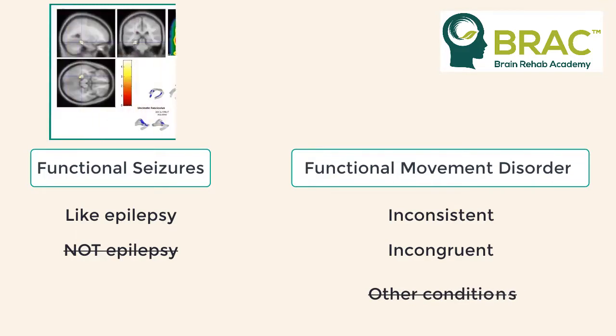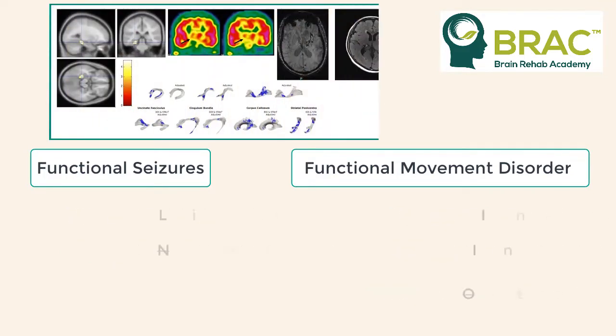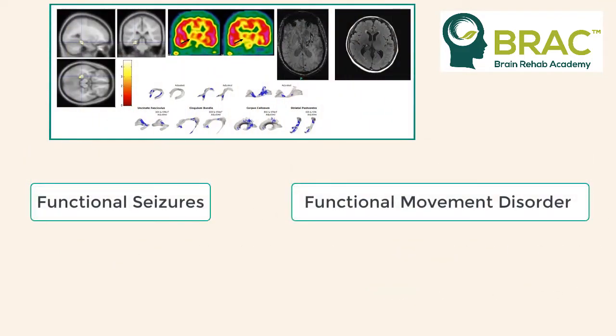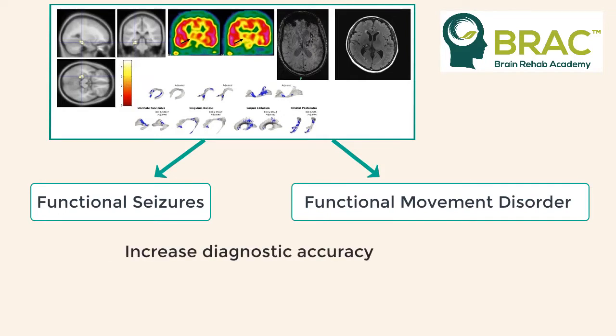Brain imaging techniques can help us differentiate between the subtypes of FND and gain a better understanding of the underlying neurological mechanisms. This allows for a more accurate diagnosis and tailored treatment approach.